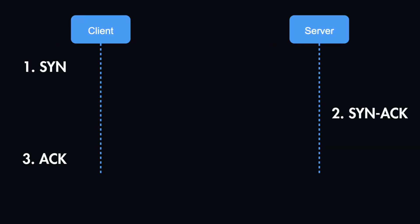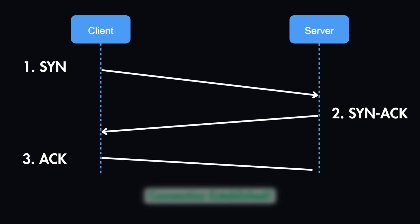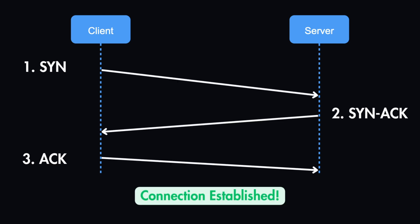This is what the three-way handshake looks like in TCP. The first step is the client sending a request to the server. In the second step, the server syncs and acknowledges the request. In the third step, the client acknowledges the server — and this is where the connection is established, after which they can start sending data back and forth over TCP.